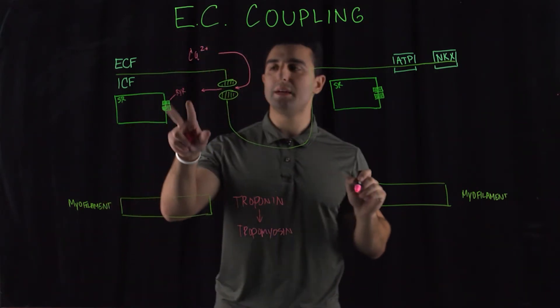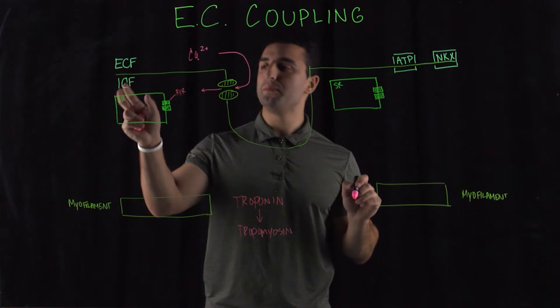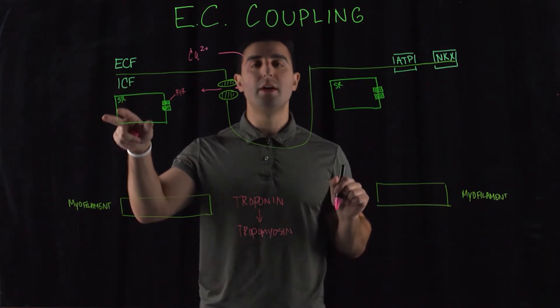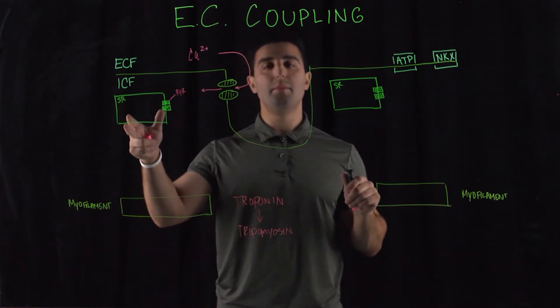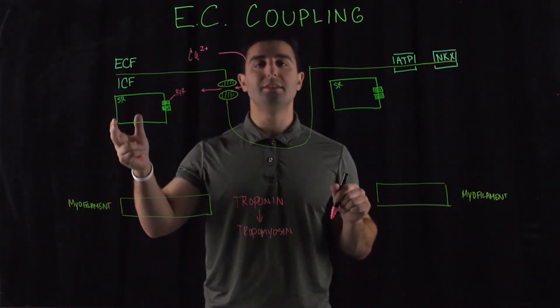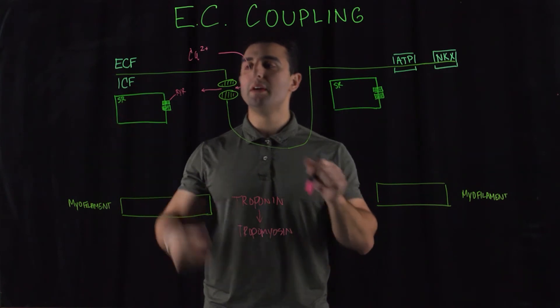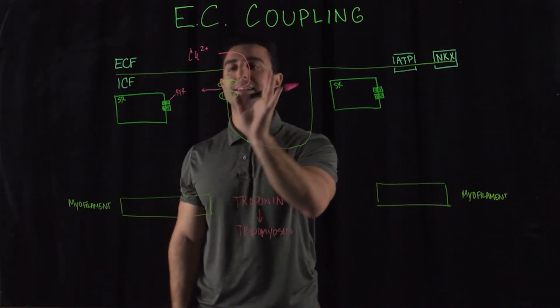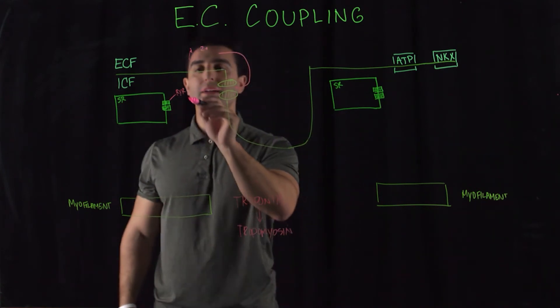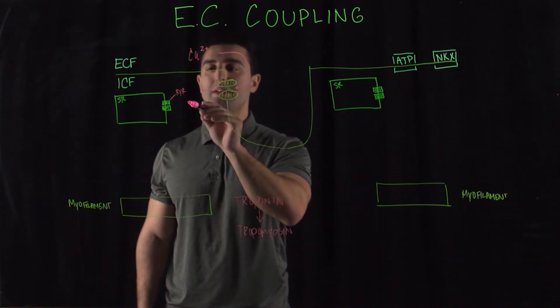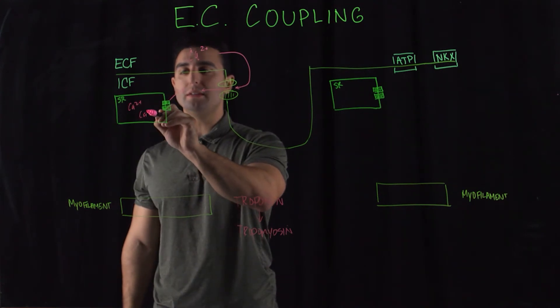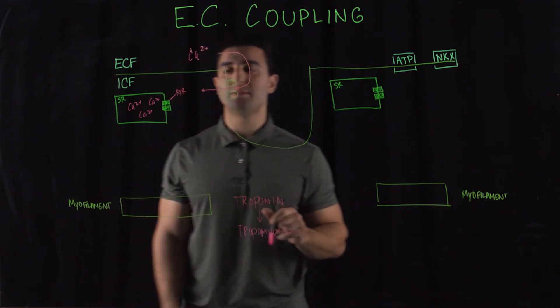This is a receptor that is next to the sarcoplasmic reticulum. Remember, from the sarcoplasmic reticulum, you have this high volume of calcium. When the calcium from the extracellular fluid acts as a catalyst to activate this RYR receptor, which opens all of this high population of calcium molecules that are present in the SR, the sarcoplasmic reticulum.